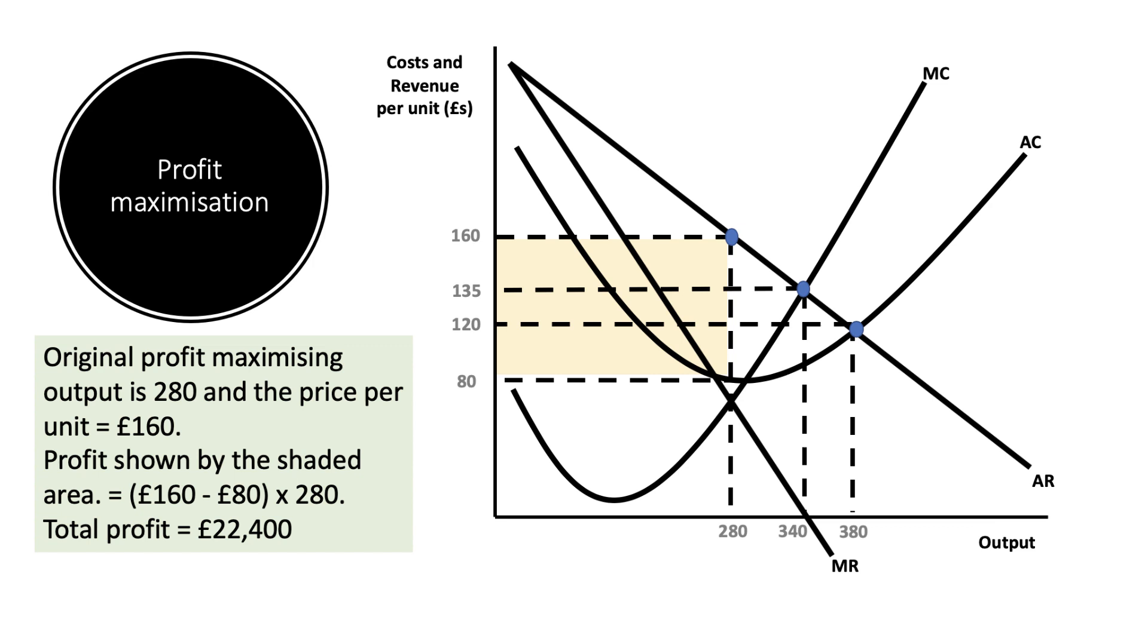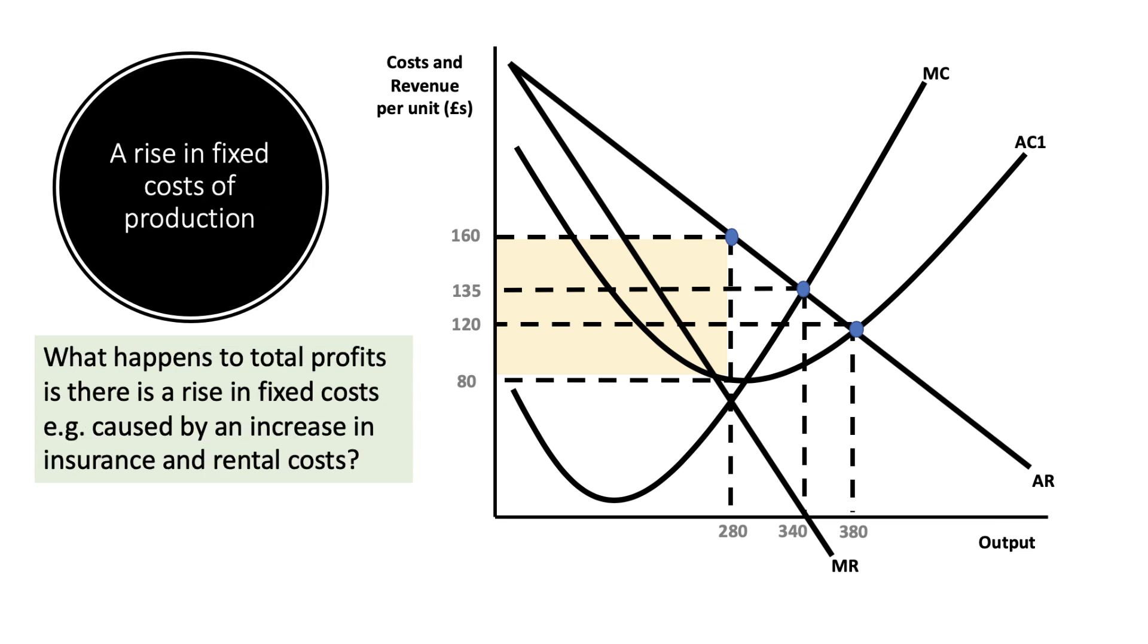Now what happens to total profits if there's an increase in a firm's fixed costs? For example, it could be brought about by an increase in insurance premiums or perhaps higher rental costs if you are a store operating on a high street or in a retail mall. So what happens to a firm's profits from an increase in fixed costs?